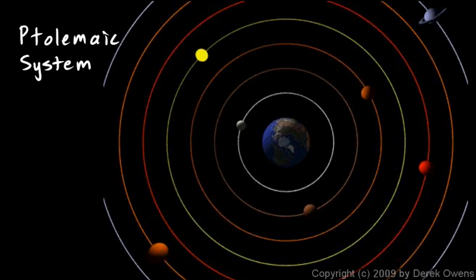Because it worked, it persisted a long time. This was the dominant understanding of the solar system all the way into the 1500s and 1600s, up until the time of Copernicus and Galileo.